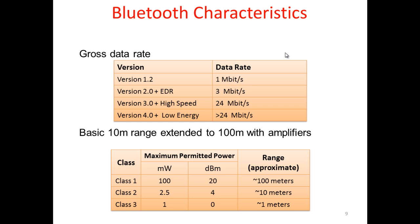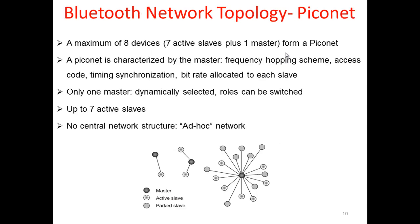Regarding Bluetooth classes and power ranges: Class 1 is 100 milliwatts with a range of approximately 100 meters; Class 2 has a range of about 10 meters; and Class 3 has a range of 1 meter.